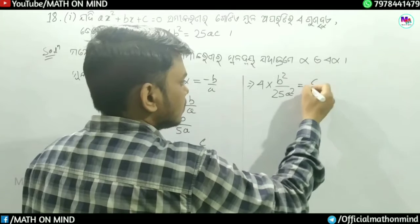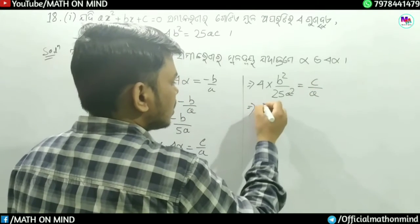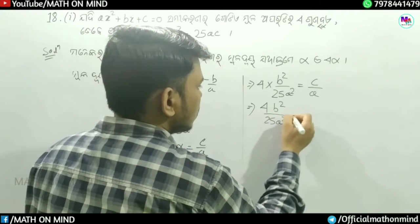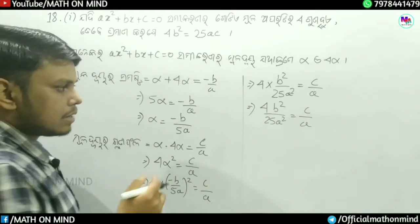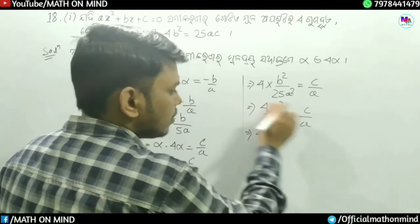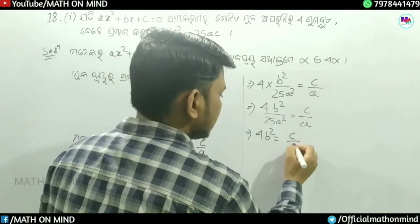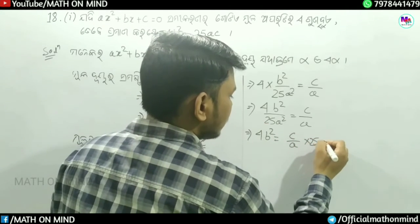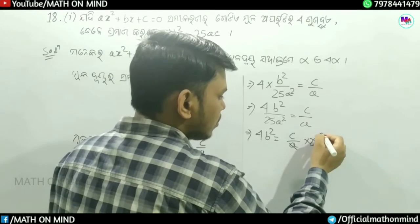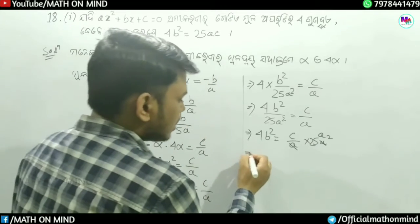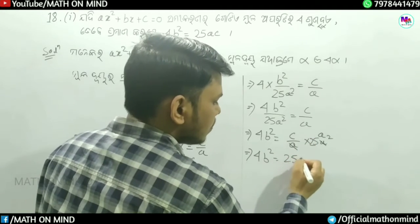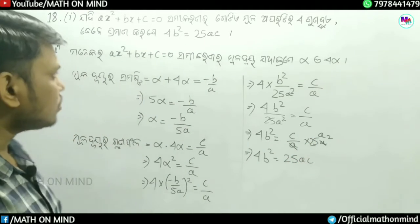4 into minus b divided by 5a whole square is equal to c divided by a. For this, minus b whole square is b square divided by 25 a square is equal to c divided by a.